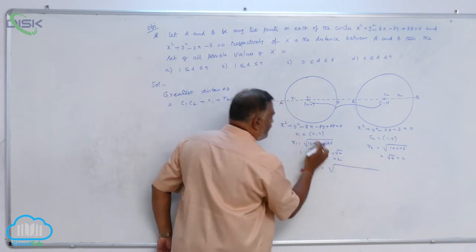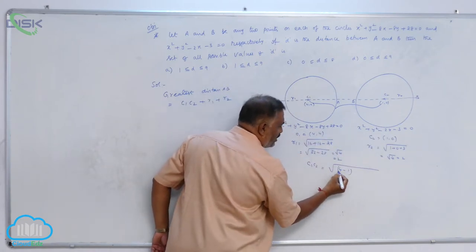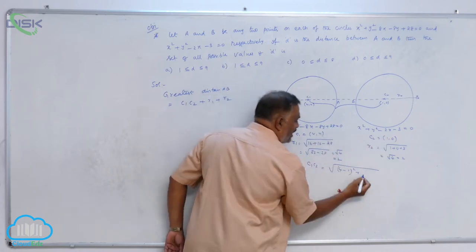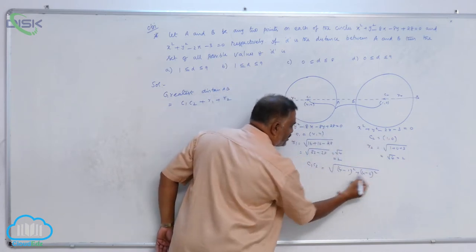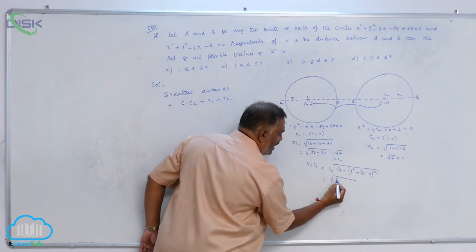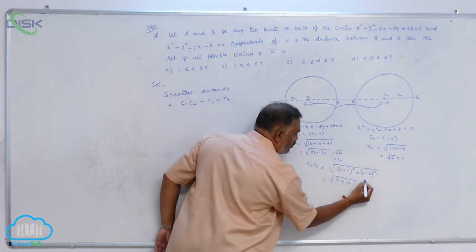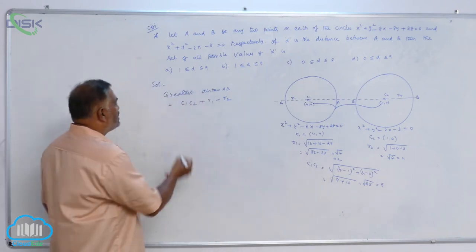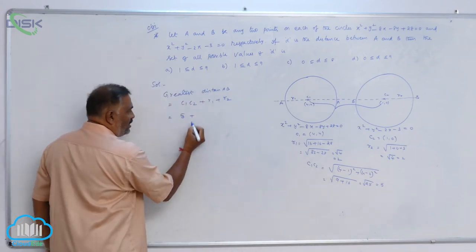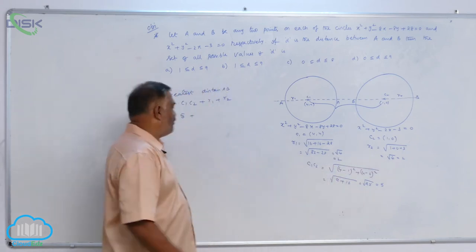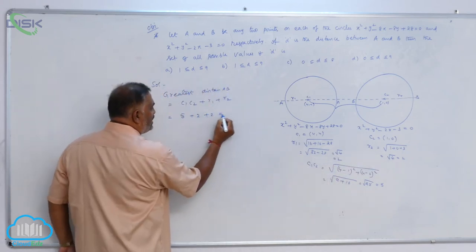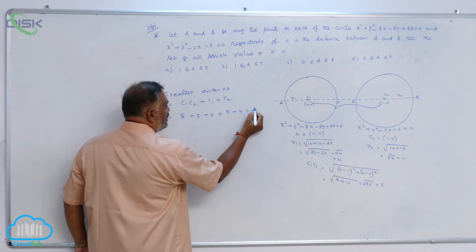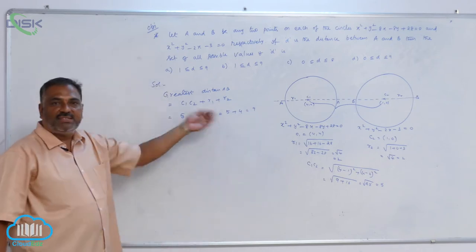√[(4-1)² + (4-0)²] = √[9 + 16] = √25 = 5. So C₁C₂ = 5. R₁ = 2, R₂ = 2. Therefore 5 + 2 + 2 = 9. This is the maximum distance.